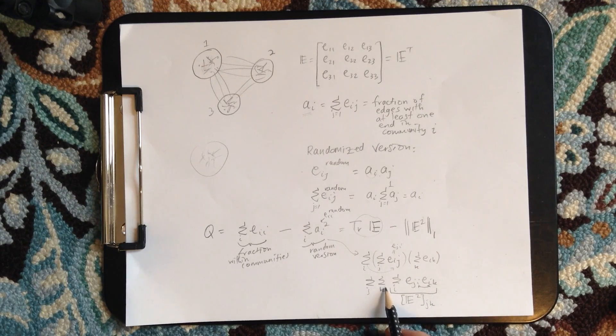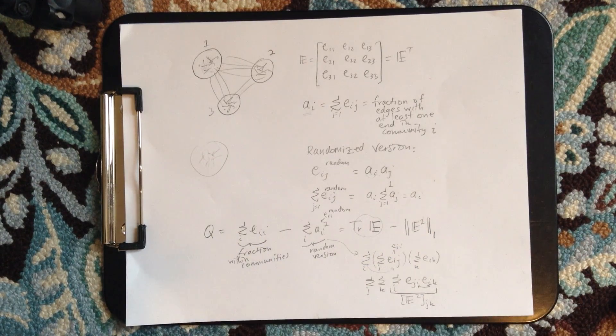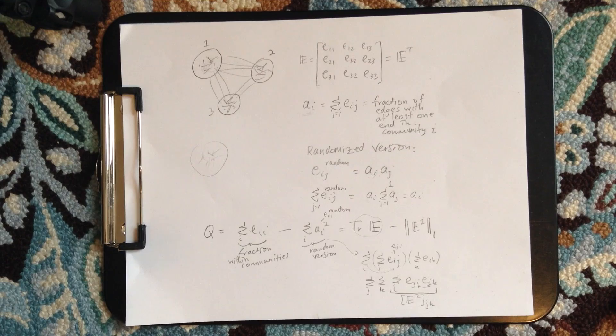And then it's the sum over J and K, so that means it's actually the sum of all of the entries. So it's what we might call the one norm of E squared. So you compute E squared and then just sum up all the entries. So that's a nice way of representing that.